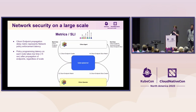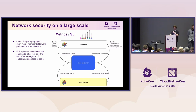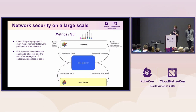The SLI we use to measure improvements on the bottleneck is the Cilium endpoint propagation delay metric, which exists in the Cilium agent and represents network policy enforcement latency. Policy programming latency on each node takes very low time — less than five seconds — after propagation of endpoints, regardless of scale. The metric captures a four-step process where the start time is Cilium endpoint creation and the end time is when that endpoint is received through a Cilium endpoint slice — that entire delay is what the metric shows.